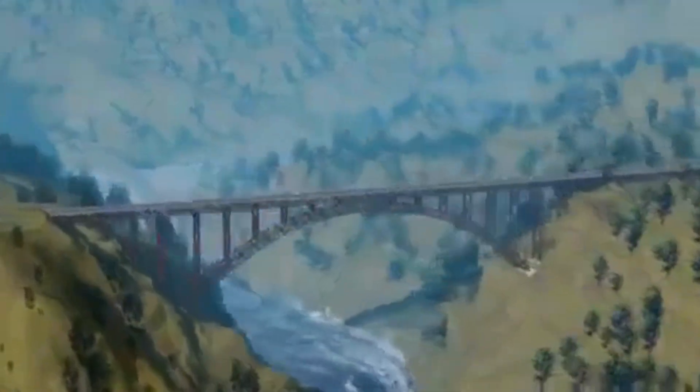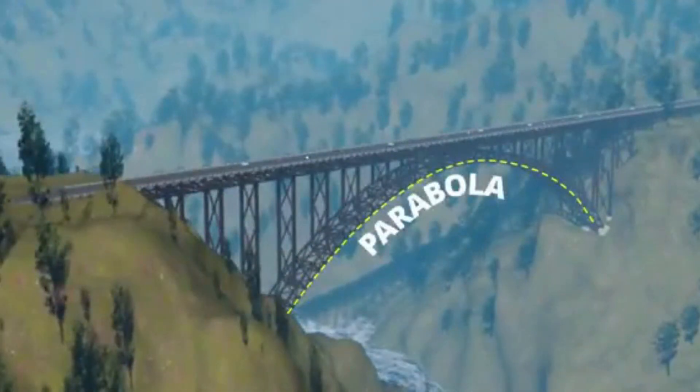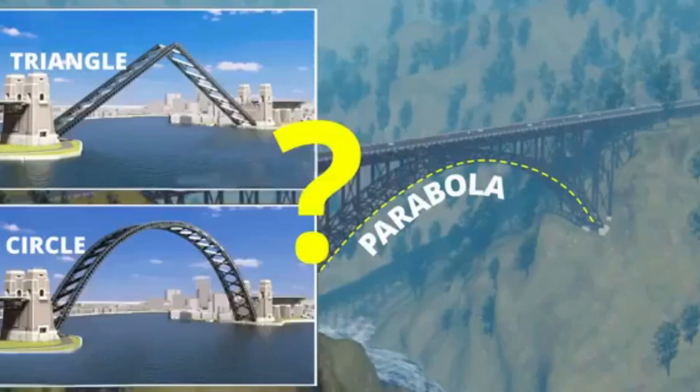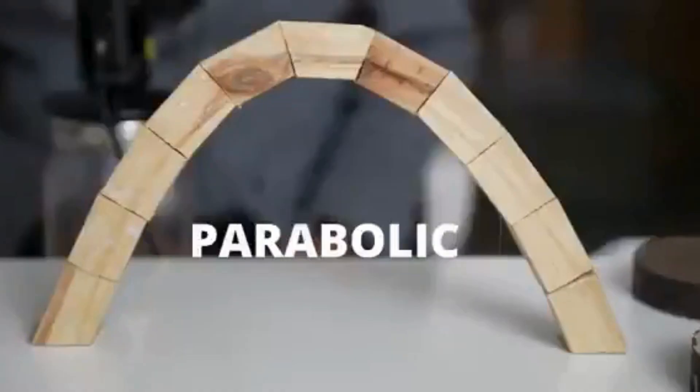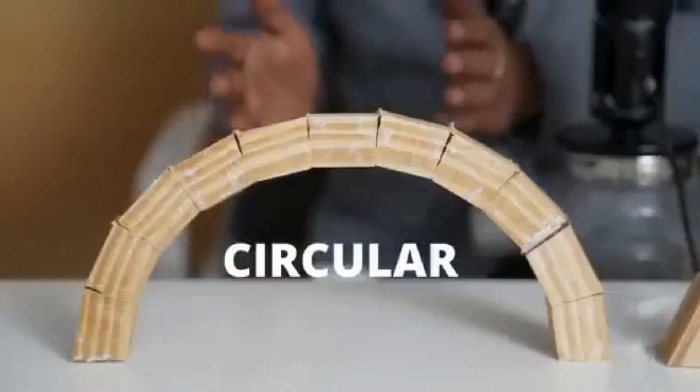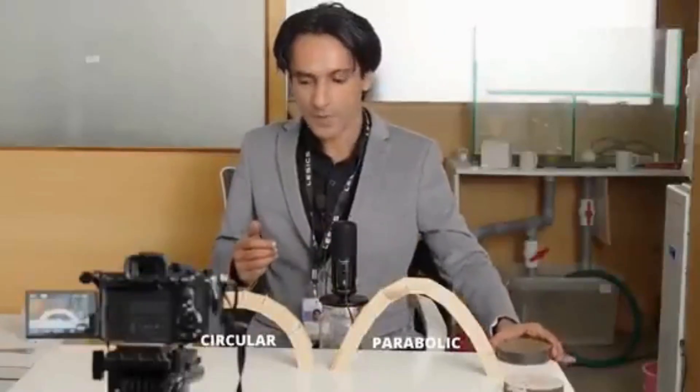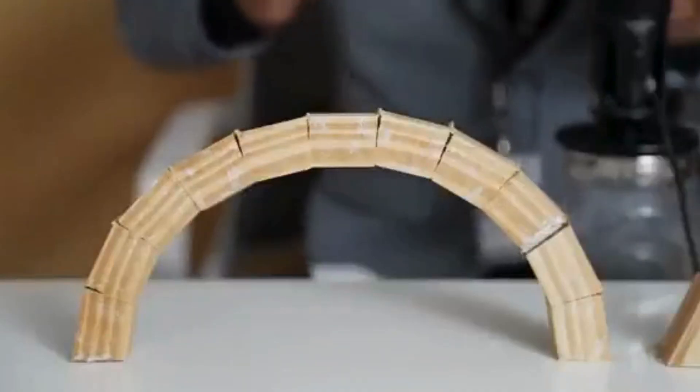The arch shape in an arch bridge is always a parabola. Why not any other shape? To get the answer for this, let's do an experiment: parabolic versus a circular arch. When I keep a weight on the circular arch...